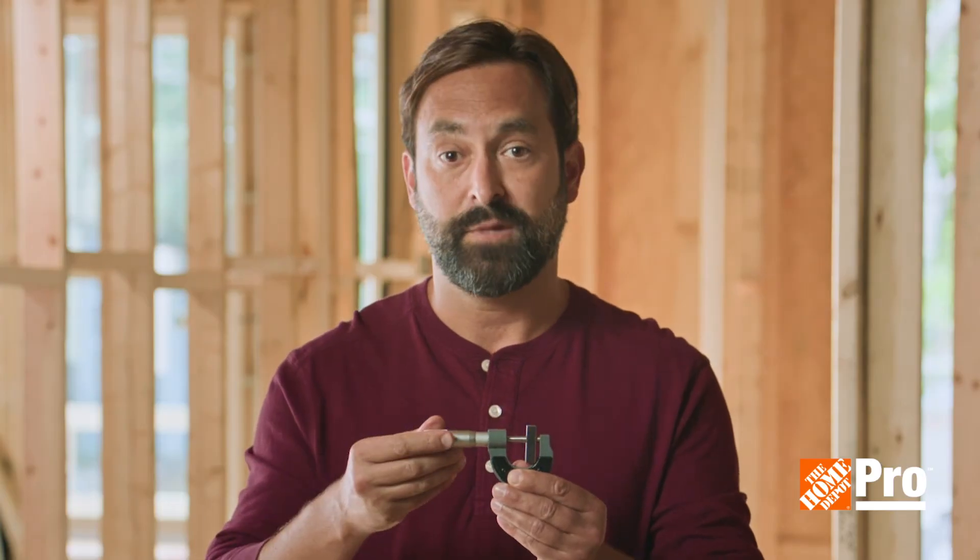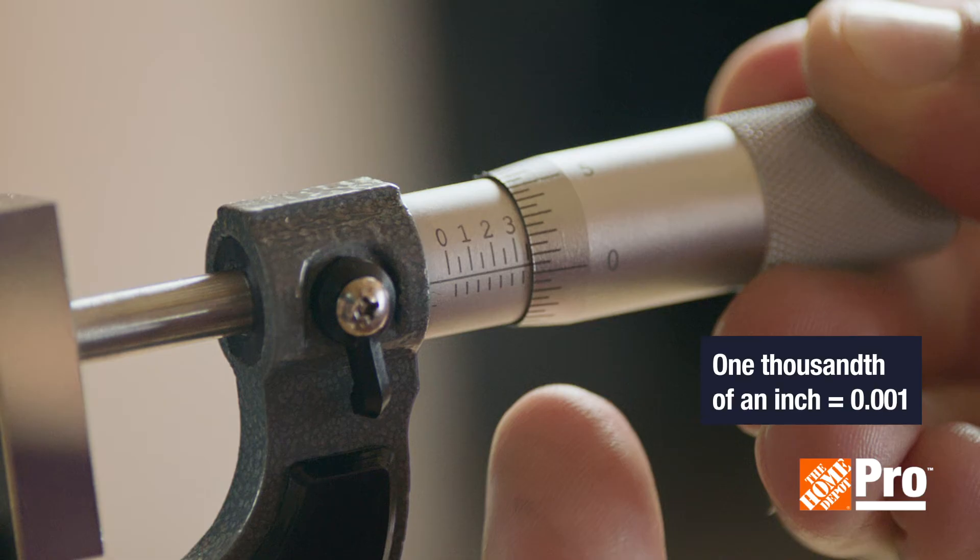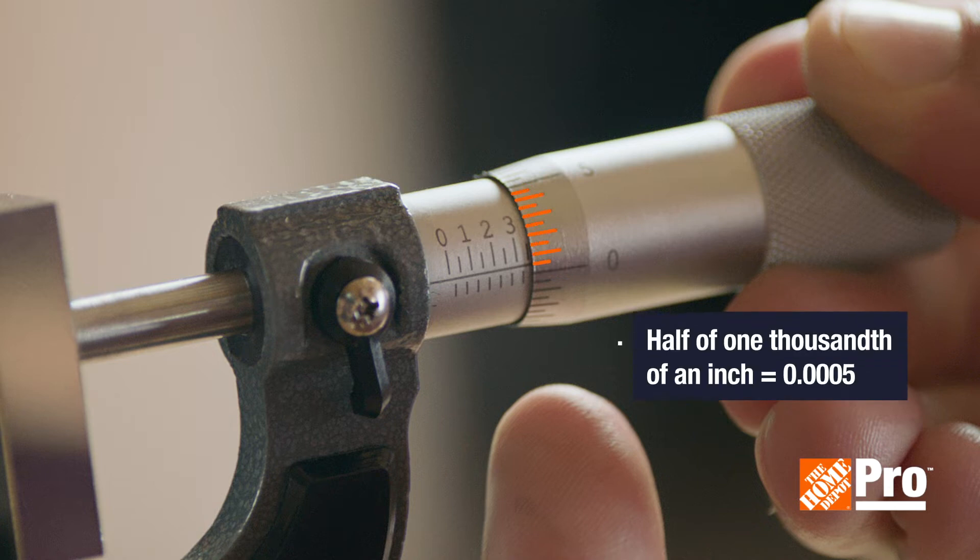Then read the thimble. The longer marks on the thimble represent one thousandth of an inch or 0.001. And the shorter marks represent half of a thousandth of an inch or 0.0005.